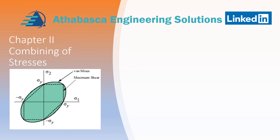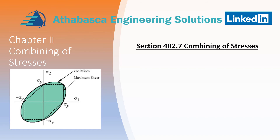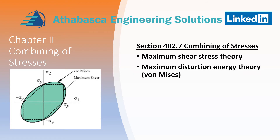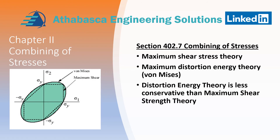After all this effort, we're finally combining our stresses together. That's all in section 4.402.7 for the flexibility analysis. There are two fundamental equations: the maximum shear stress theory, shown in the diagram where the stress range is based on the yield stresses of the material, and the maximum distortion energy theory, which is more circular. The distortion energy theory is less conservative than the maximum shear stress theory — you can see how it allows for a bigger envelope on the edges.